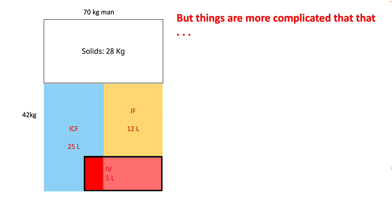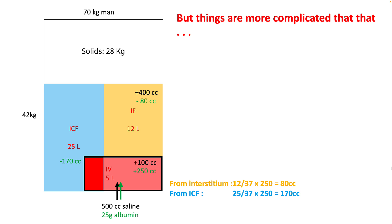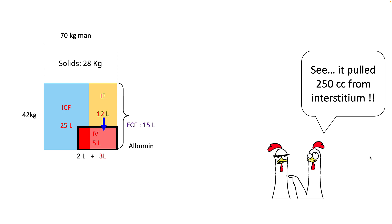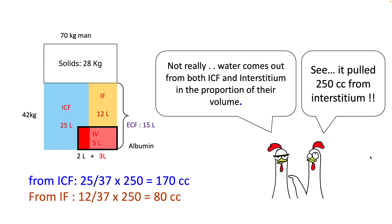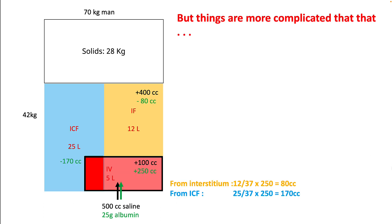But things are a little more complicated than that. Remember, 500 cc of saline distributes between interstitium and intravascular space, and 25 grams of albumin hangs on to 250 cc of plasma. You'd be tempted to think that this 250 cc pull came from the interstitium. However, if you pull fluid from the interstitium, the interstitium becomes more concentrated and pulls fluid from the intracellular compartment. So in fact, water comes from both interstitial fluid and the intracellular compartment in proportion to their volumes — around 170 cc from ICF and 80 cc from interstitial space. So this 250 cc comes from both interstitium and intracellular compartment.